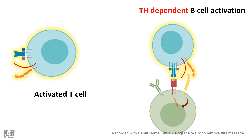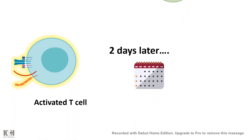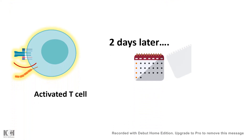So T-cell activation is super important for the immune system. But imagine a situation where T-cells are hyperactivated — then instead of helping the body, it might make the situation worse. So we need a safeguard mechanism by which we can prevent over-activation of the T-cells, and these kinds of mechanisms are present in the T-cell itself.